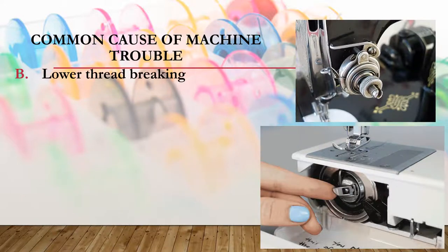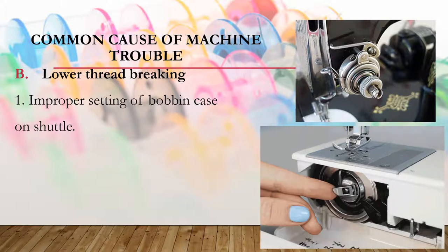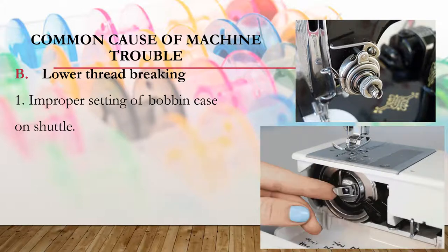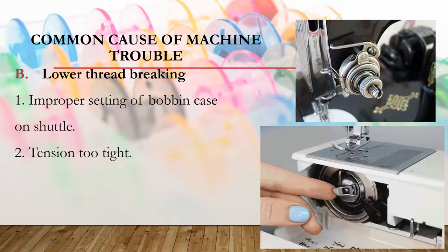Another sewing machine problem you can encounter is lower thread breaking. If this happens, you might have an improper setting of the bobbin case on the shuttle. You should set the bobbin case on the shuttle properly to avoid lower thread breaking. Another cause is the tension being too tight; if the lower tension on the bobbin case is too tight, you need to adjust it.